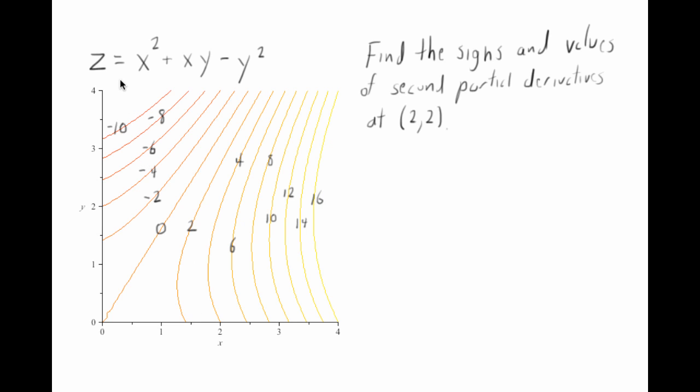In this video, we've got this function here of two variables. We've got its contour plot. And what I want to do is I want to find the signs and values of second partial derivatives at (2, 2).